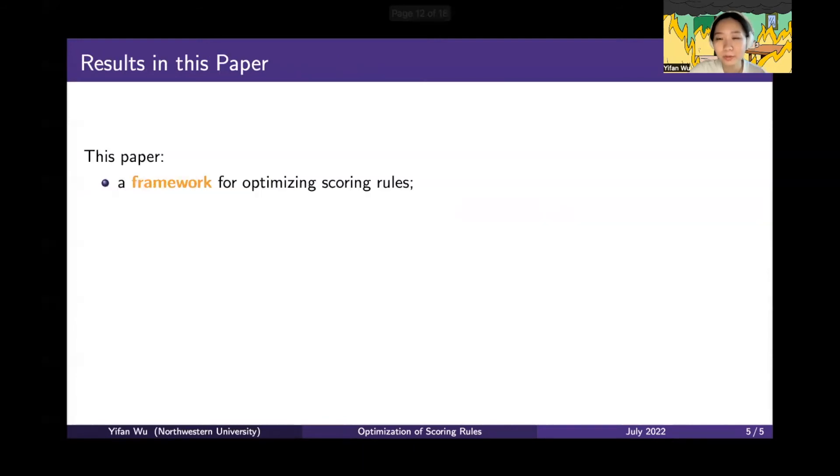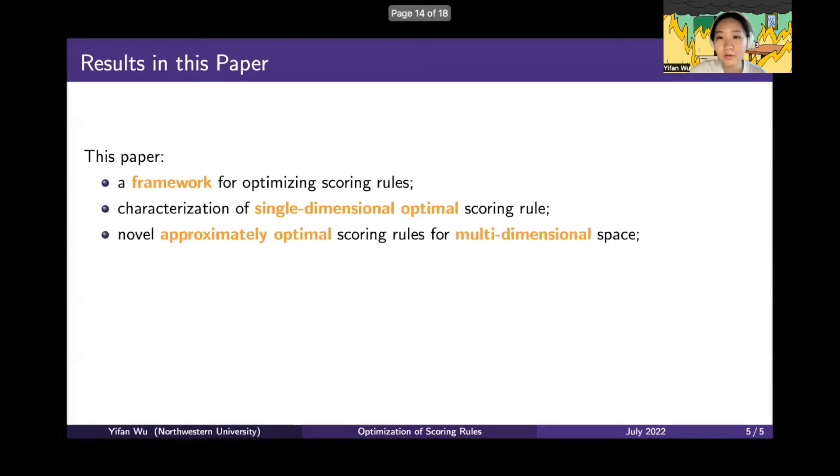In our paper, we propose a framework for optimizing scoring rules. When the report space is on the real line, which is single-dimensional, we characterize the optimal scoring rule. For multi-dimensional problems, we design this kind of approximately optimal scoring rule.